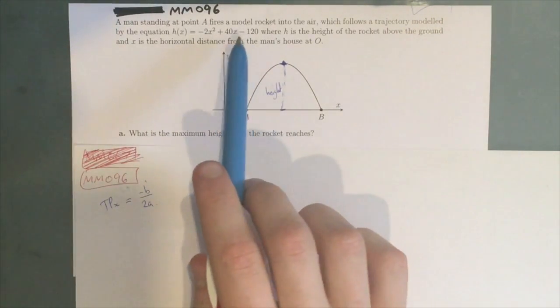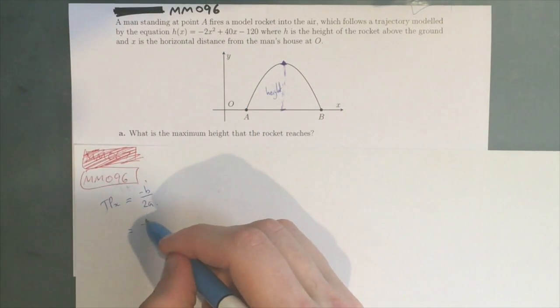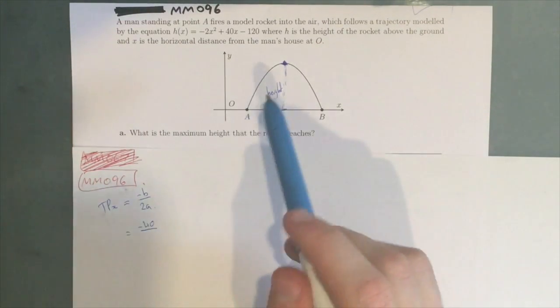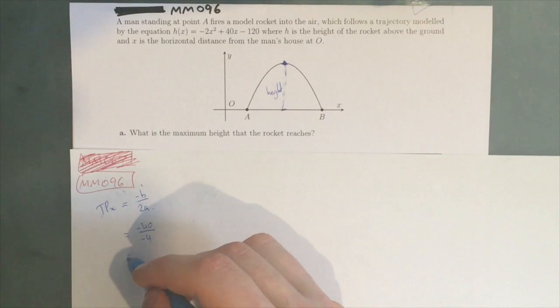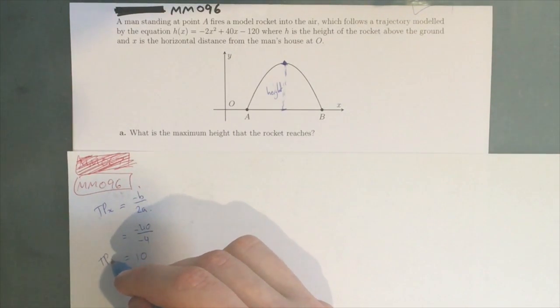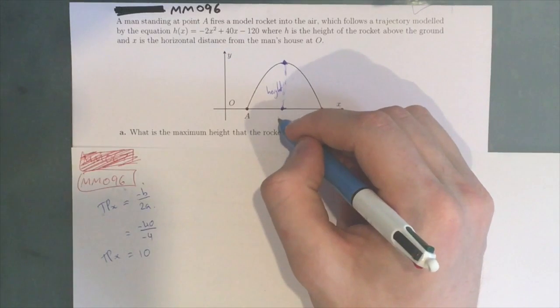B is 40, so we have -40 over 2 times A, which is -2. So -40/-4, and that equals 10, which means that this point here is 10.